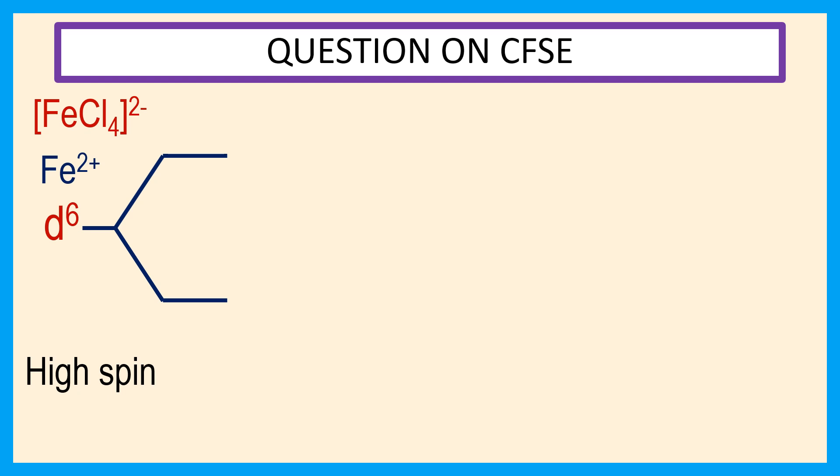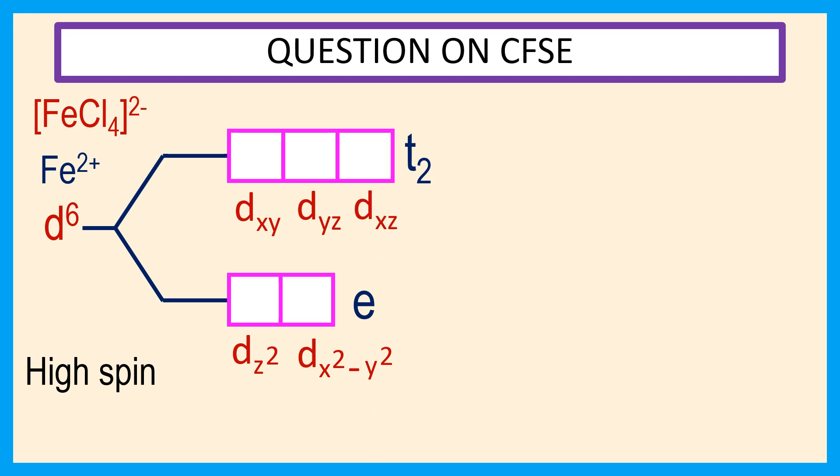Splitting of the d orbitals are two e orbitals, which are d z square and d x square minus y square. Three t2 orbitals, which are d xy, d yz, and d xz.